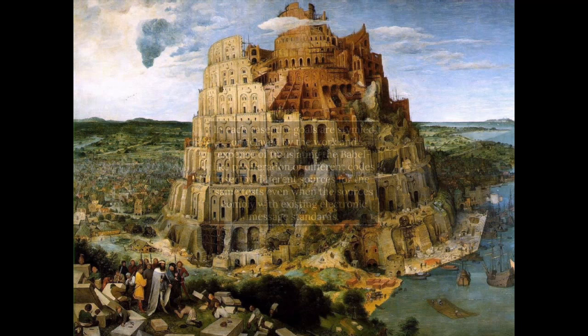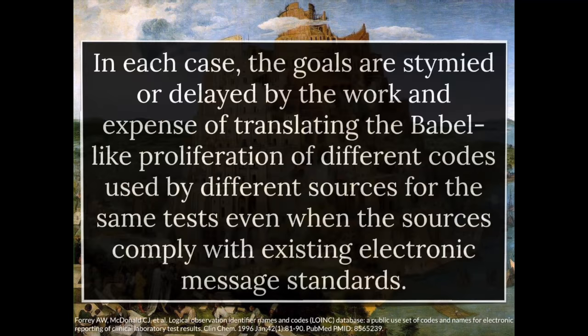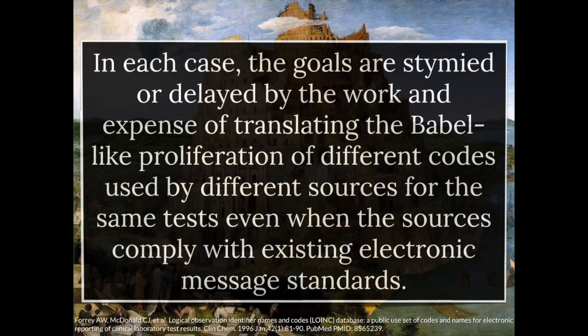In the early origin story of LOINC, the original paper described it like this: the goals of information exchange, of sharing data from one system to another, are stymied or delayed by the work and expense of translating this Babel-like proliferation of different codes used by different sources for the same tests. This happens even when those source systems are complying with electronic messaging standards — the format of the message could be the same, but inside that structure there were different codes, different identifiers, different labels for the same test.